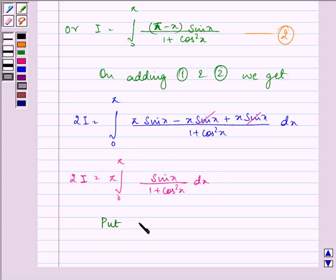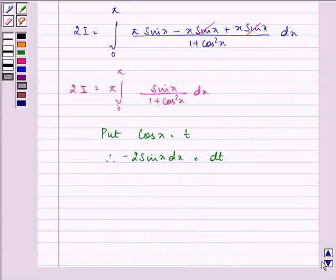If we put cos x equal to t, then negative sin x dx equals dt. The limits change from 0 to π to negative 1 to 1, giving integral from -1 to 1 of dt over 1 plus t².